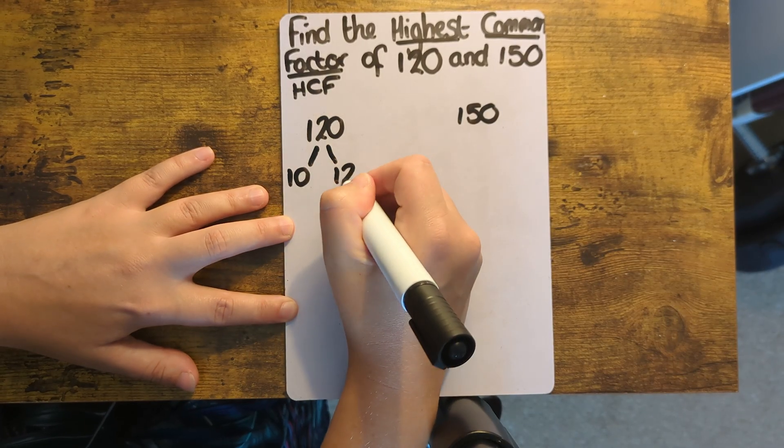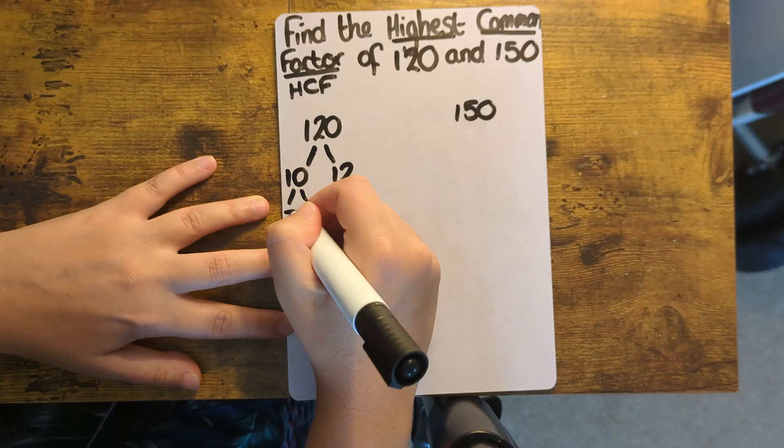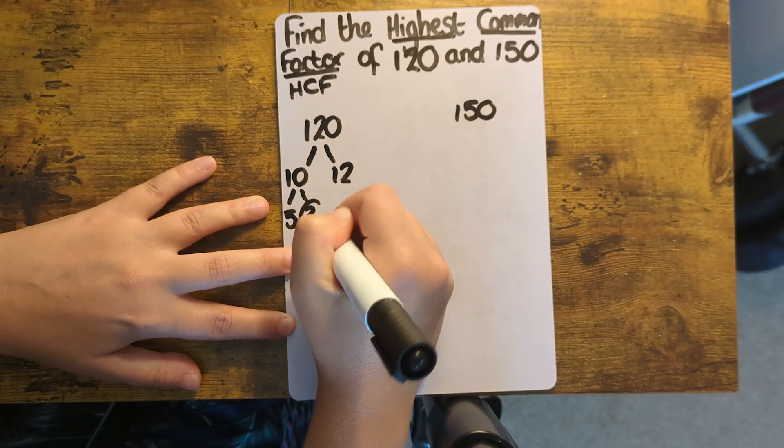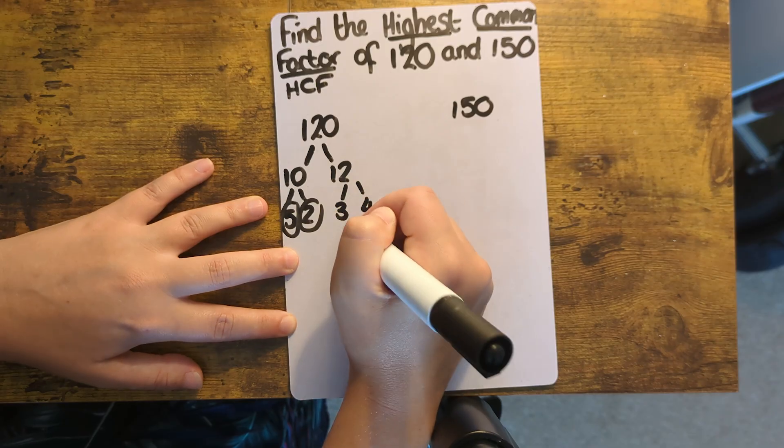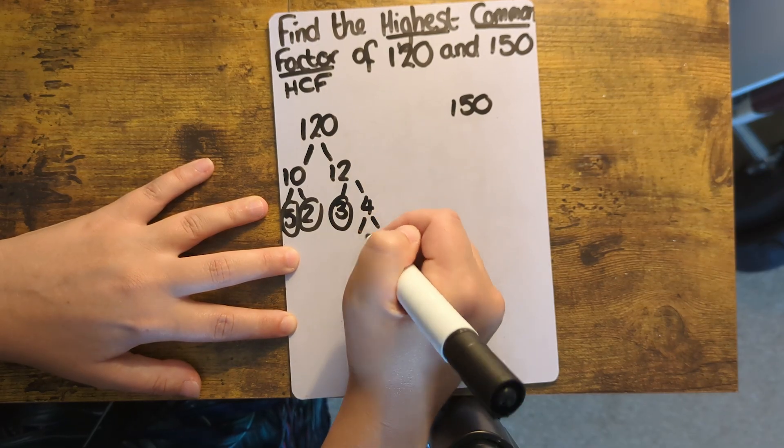So I need to start by finding two numbers that multiply together to make 120. I'm choosing 10 and 12. I then need to keep multiplying until I'm only left with prime numbers, which I'm going to circle.